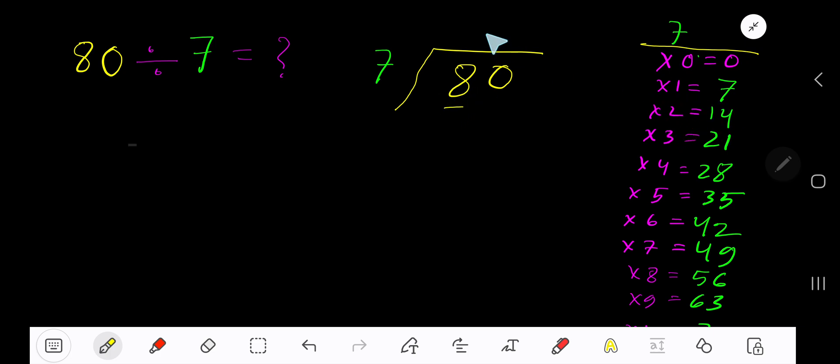14 which is greater, so 1 time. 1 times 7 is 7. Subtract 1, bring down the next digit. 7 goes into 10 how many times? 2 times 14 which is greater.